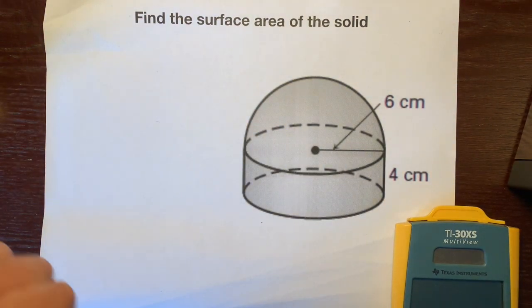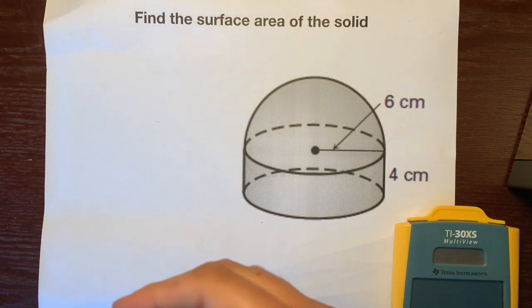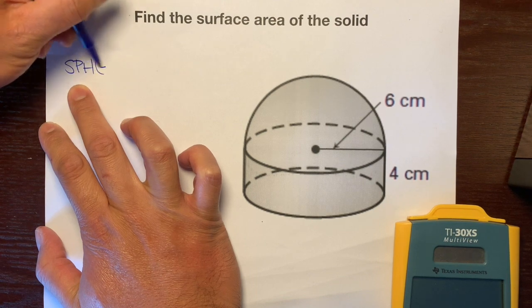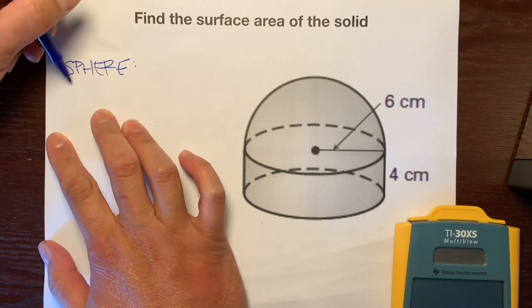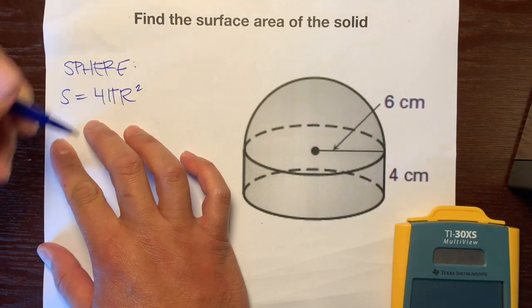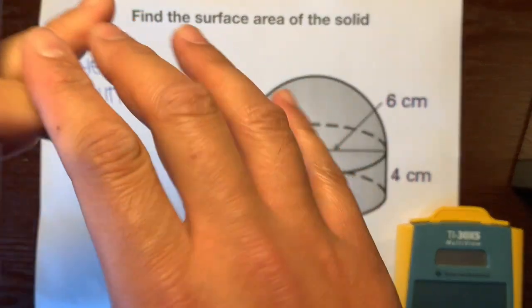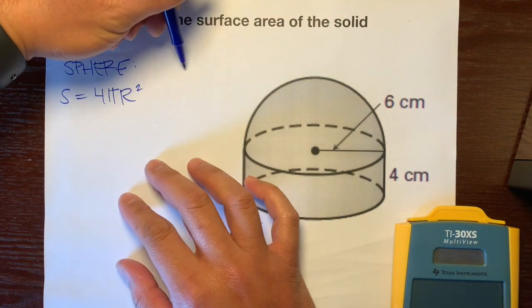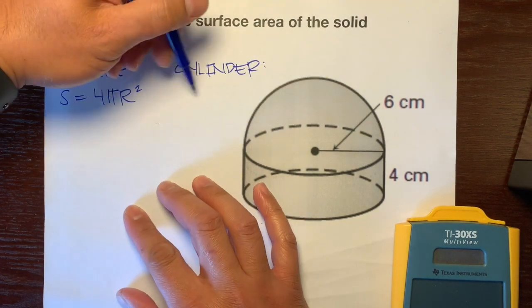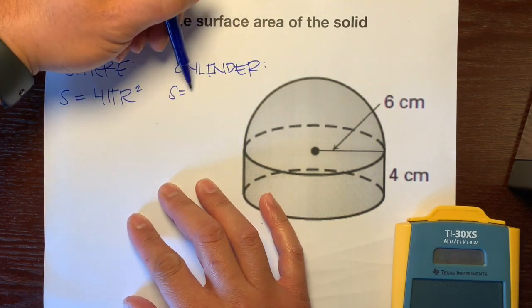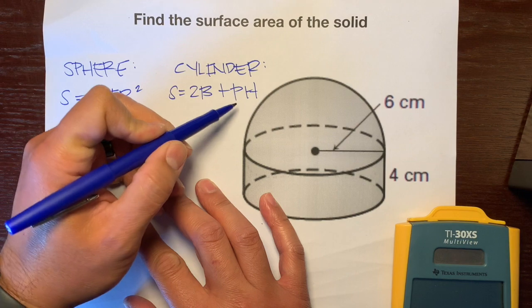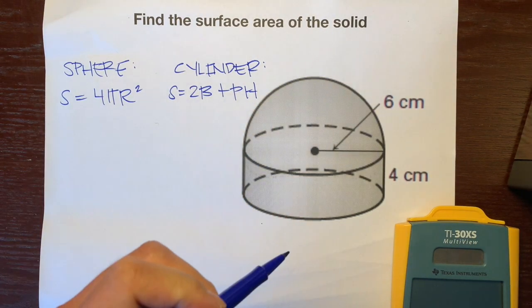The first formula is the surface area of a sphere. Surface area is 4πr² because it takes four circles to completely cover a sphere. And the cylinder is S = 2B + PH for the two base areas, the base perimeter, and the distance between the two heights.